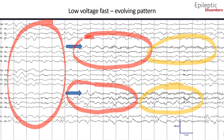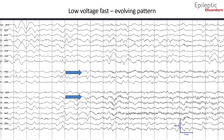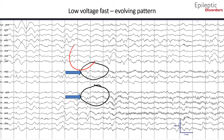We will now look at the same EEG in average montage. Over the right frontal regions in the F8, FP2, and frontal midline channels, there is an initial sharply contoured waveform followed by a brief attenuation with buildup of low-voltage fast frequency activity that becomes more apparent towards the end of the page.